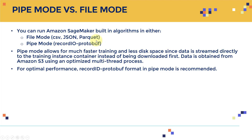For pipe mode, the data needs to be in RecordIO Protobuf format, which speeds up the training process significantly. Pipe mode allows for much faster training and less disk space since data is streamed directly to the training instance container instead of being downloaded first, using an optimized multi-threaded process from S3. For optimal performance, RecordIO Protobuf format in pipe mode is recommended.